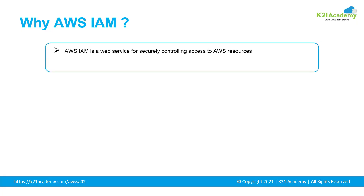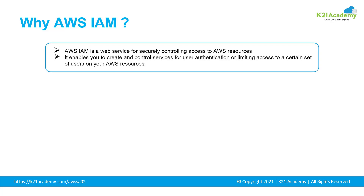AWS Identity and Access Management is a web service for securely controlling access to AWS resources. It really helps us to authenticate and limit access to a certain set of users accessing the AWS account, or certain users accessing a certain set of resources within an AWS account.